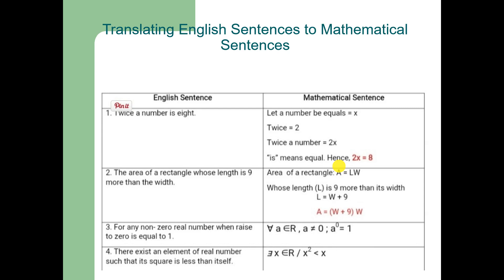Similarly, consider the area of a rectangle whose length is 9 more than the width. The area of a rectangle is A = length × width. The length L is 9 more than its width, so L = W + 9. Therefore, A = (W + 9) × W. This is the mathematical sentence for the area of a rectangle whose length is 9 more than the width.